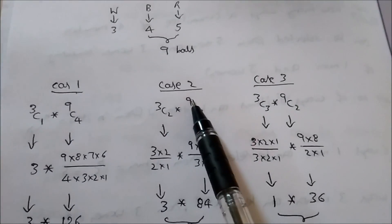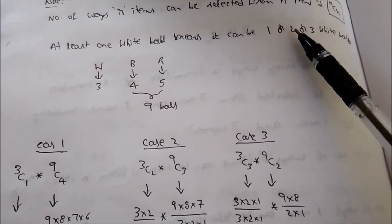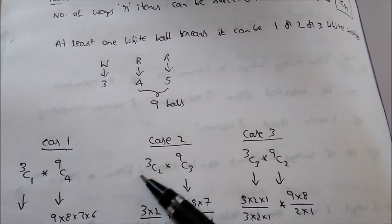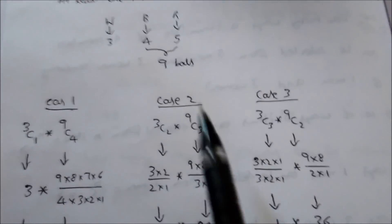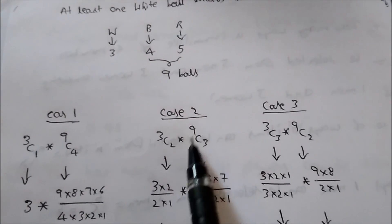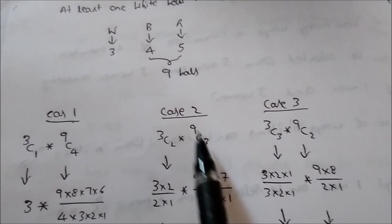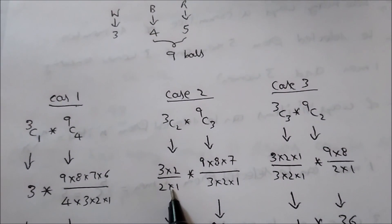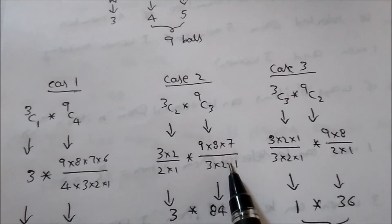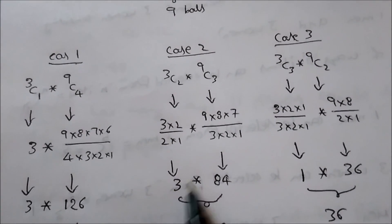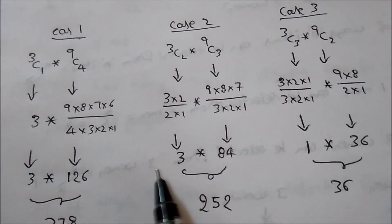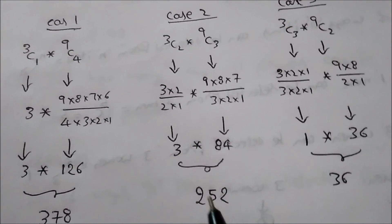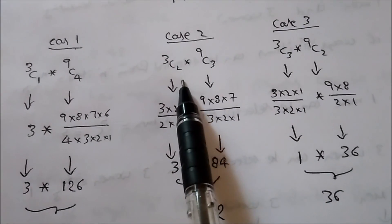Case 2: We draw two white bars and three other bars. 3C2 means among three white bars we are drawing two: value = (3 × 2) / (2 × 1) = 3. 9C3 means drawing three bars from the available nine: value = (9 × 8 × 7) / (3 × 2 × 1) = 84. Multiplying: 3 × 84 = 252 ways.